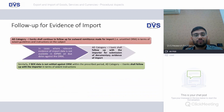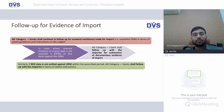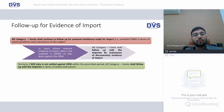For follow-up for evidence of import: AD Category bank shall continue to follow up for outward remittances made for imports in cases where relevant import data is not available in IDPMS on due dates against the ORM. The AD bank shall follow up with the importer for submission of documentary evidence of import. Similarly, if BOE data is not settled against ORM within the prescribed period, AD bank shall follow up.